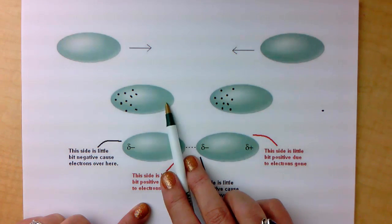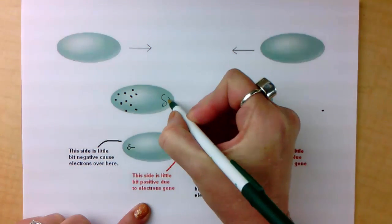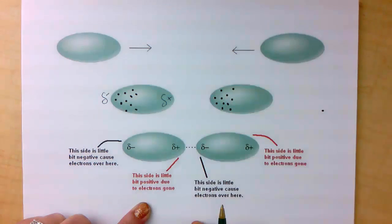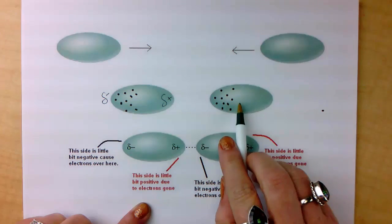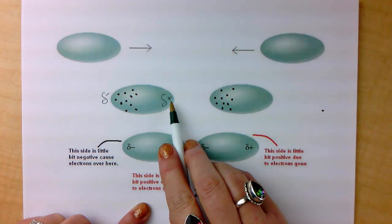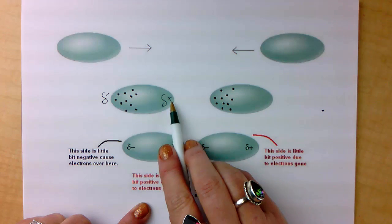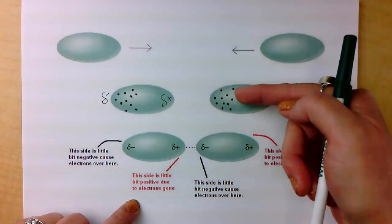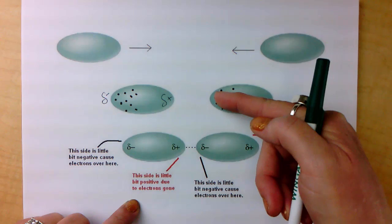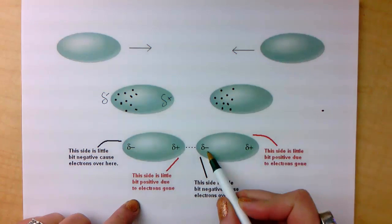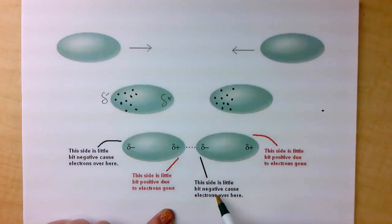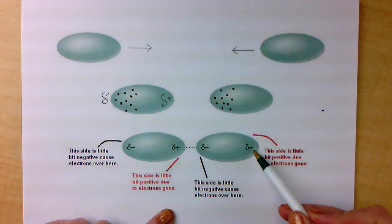So this side here is a little bit positive. This side is a little bit negative. Now the second molecule, the electrons are going to be attracted to that positive charge. So the electrons are all going to come over on this side for a moment. Again, it's temporary. Making this side a little bit negative because the electrons are over here. And then this side has to be a little bit positive because the electrons are gone.